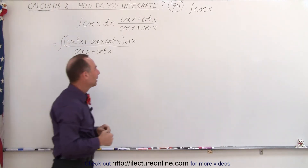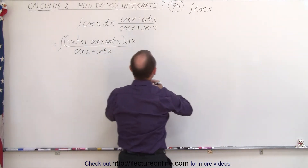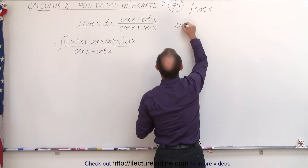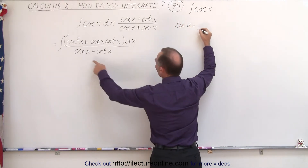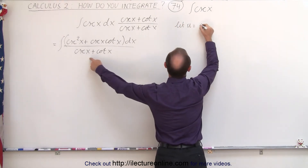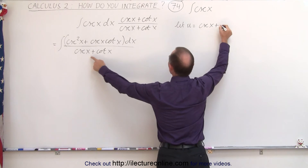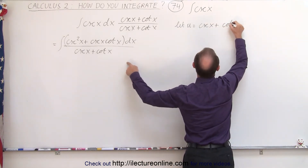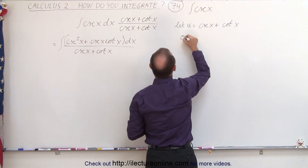Let's find out. Let's take the denominator. If we let u equal the denominator — the cosecant of x plus the cotangent of x — what would du look like?